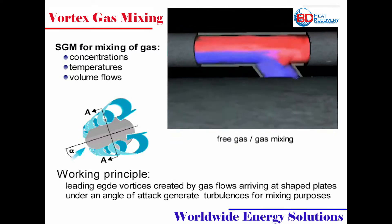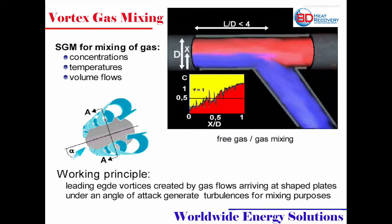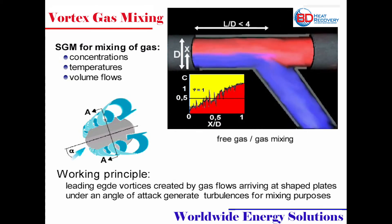Mixing of two gases behind a converging wave without a mixing device creates uneven profiles of concentration, temperature and flow distribution, as can be seen from the diagram showing distribution across the channel width.